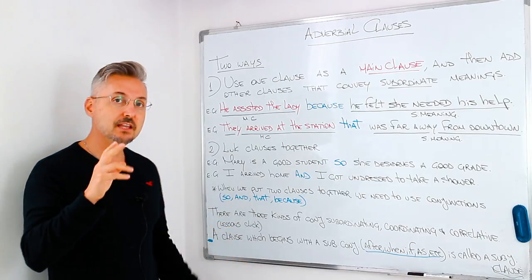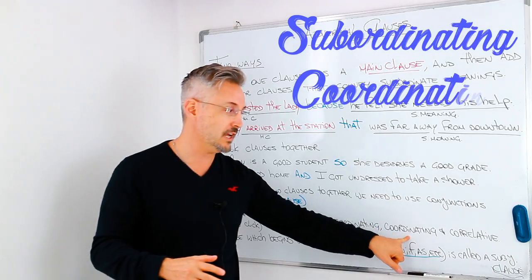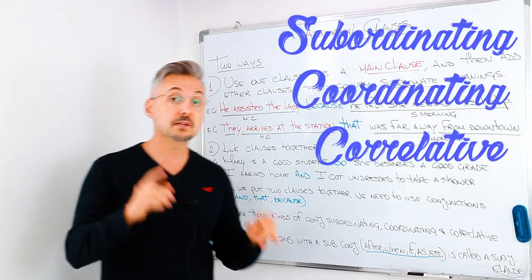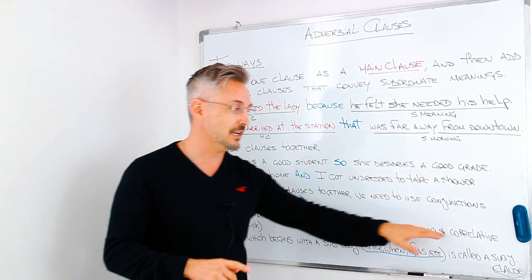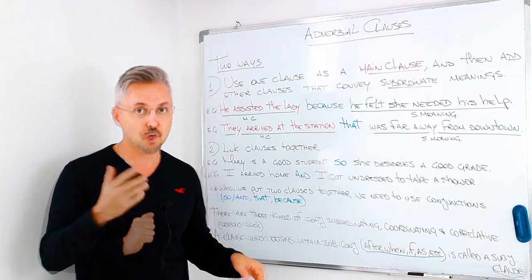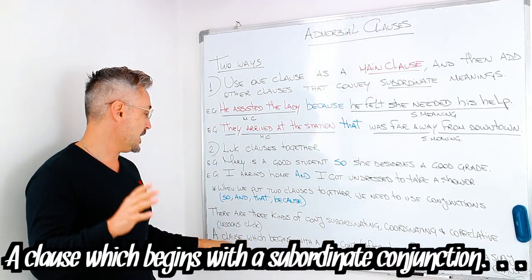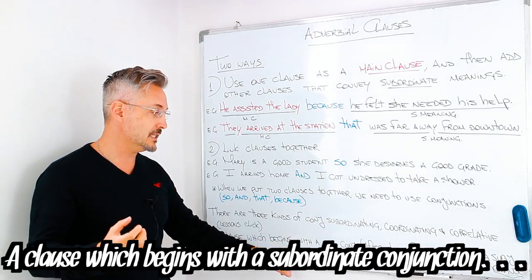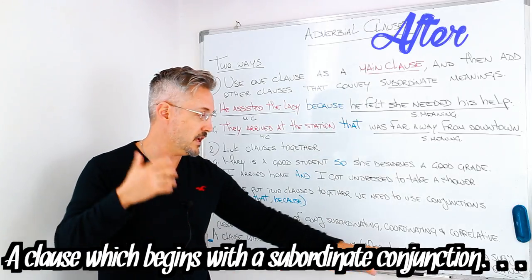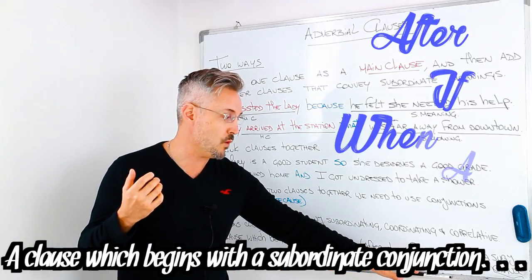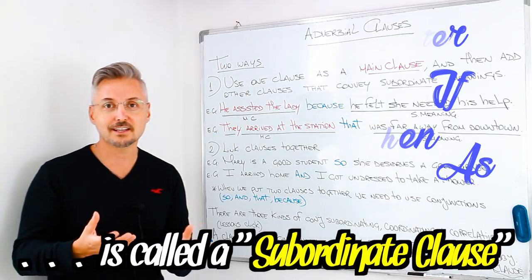There are three kinds of conjunctions: subordinating, coordinating, and correlative. There are lessons — not just one but three lessons — on subordinating, coordinating, and correlative conjunctions. If you want to watch those lessons, you may click here. A clause which begins with a subordinating conjunction — after, if, when, as, etc. — is called a subordinate clause.